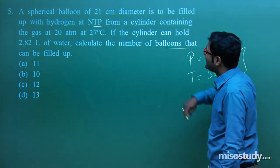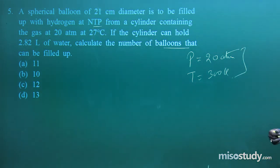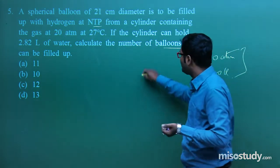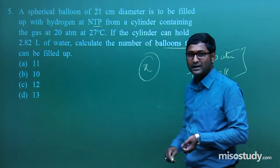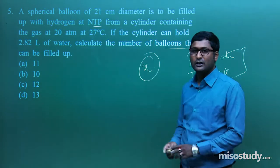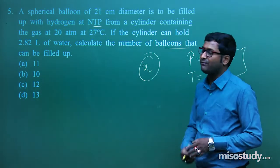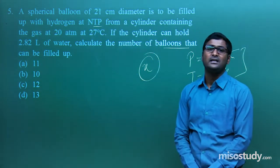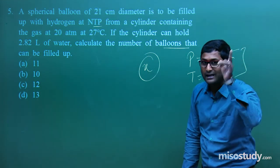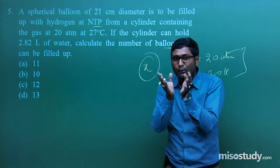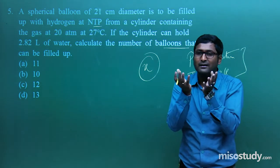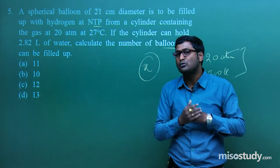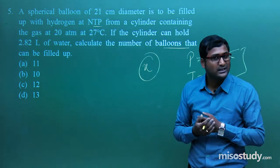We have a certain amount of hydrogen — x liters — and we need to find how many balloons can be filled. If one balloon requires 2 L of hydrogen and you have 10 L, then 10/2 = 5 balloons. Similar logic applies here. First, diameter = 21 cm, so radius = 21/2 cm.